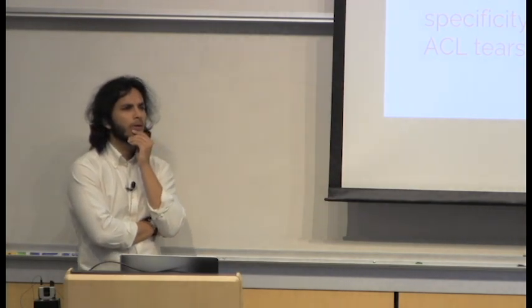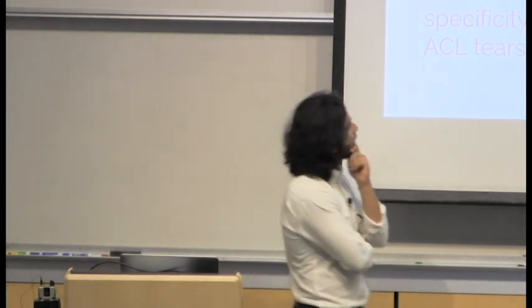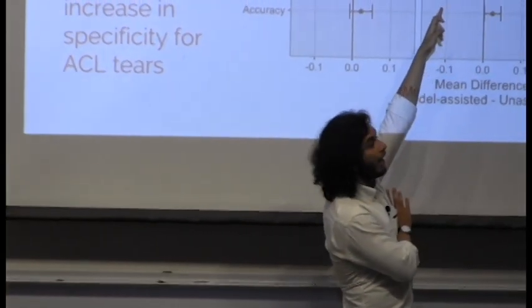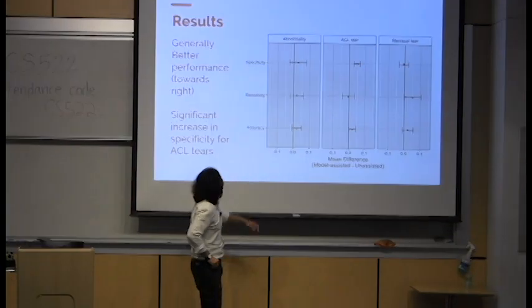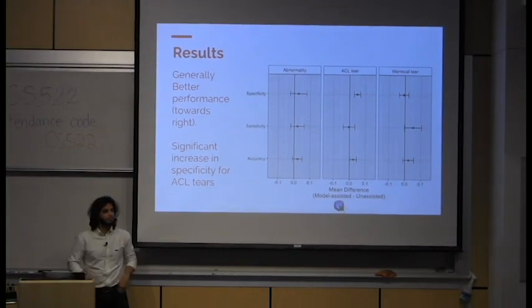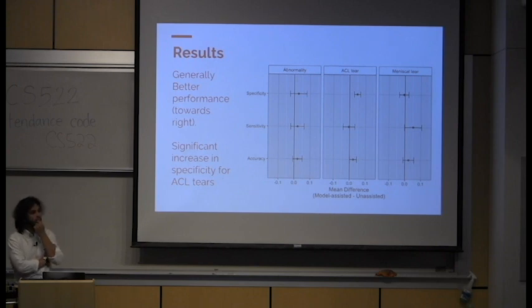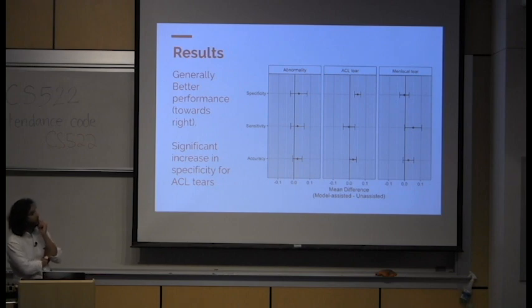On the slide showing model vs. expert improvement: the takeaway is that if you look at the 95% confidence intervals, the only metric where the lower bound is greater than zero is the specificity of the ACL tear. The dot represents the mean difference — if it's greater than zero it means improvement — and the bars are the confidence intervals.